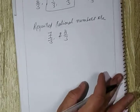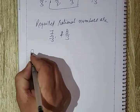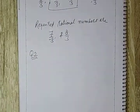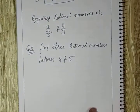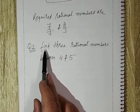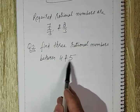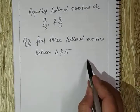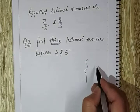Now I'll take question number two so that you can understand well. Question number two: find three rational numbers between 4 and 5. Using the same method — how many numbers do we need to find? We want to find out three rational numbers.